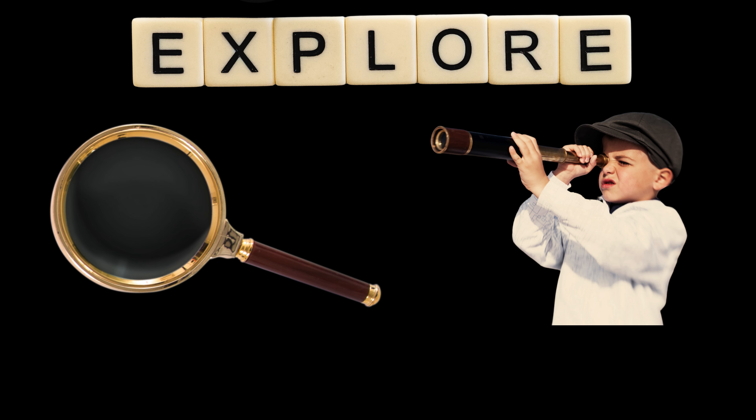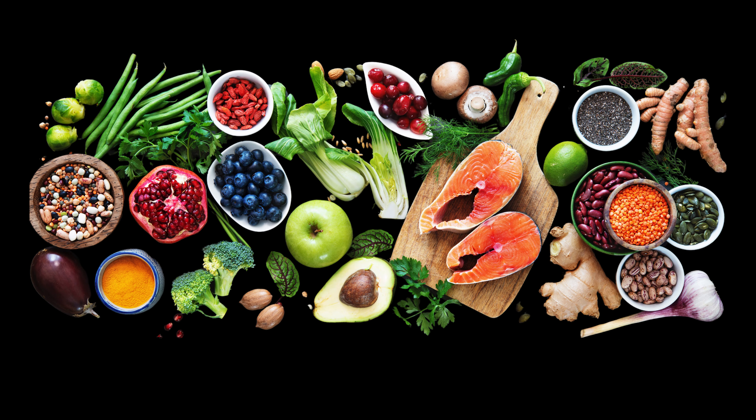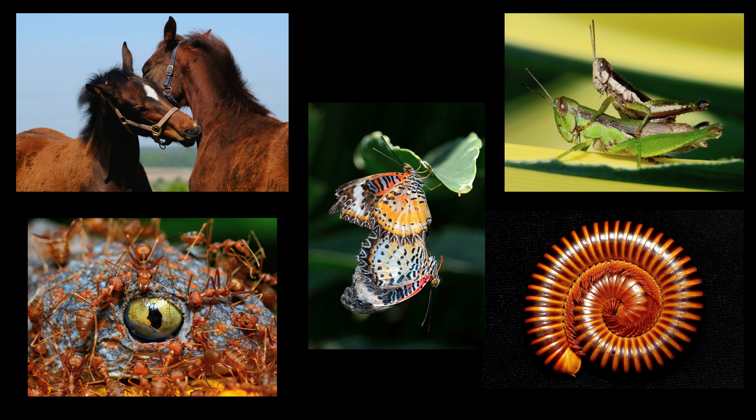In this lesson, we explore the basic needs and characteristics of living things. All living organisms, including plants and animals, share common traits such as growth, reproduction, and response to their environment. They need energy, which they obtain from food, and resources like water, air, and nutrients to survive. This foundational understanding helps students grasp why living things behave and function the way they do.